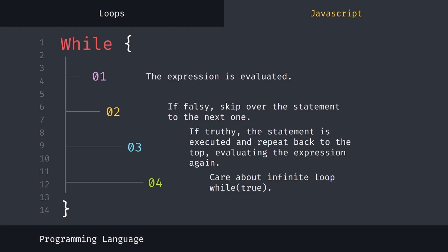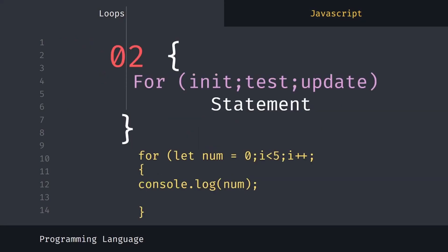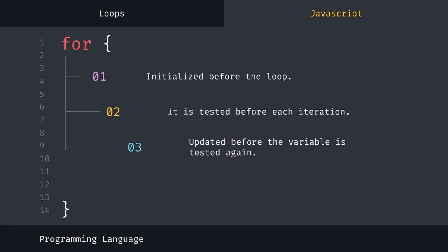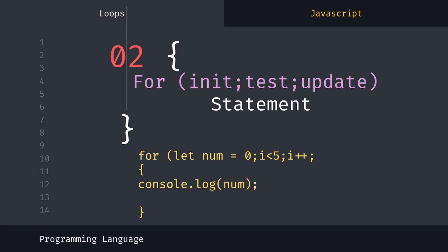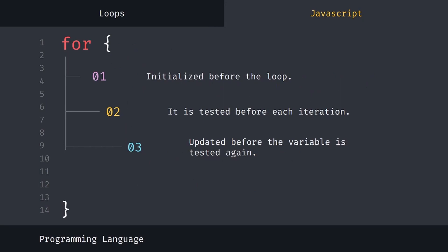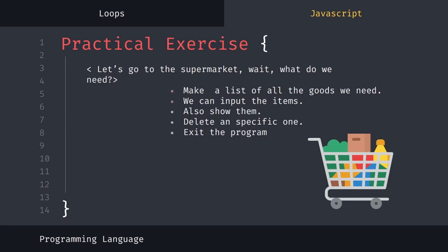You have to be careful about the infinite loop — when while is always true. The second loop is the for loop. First we need to initialize the variable, test it, and update it. Initialize before the loop, test if true to execute the statement, and always update the variable for it to be tested again.